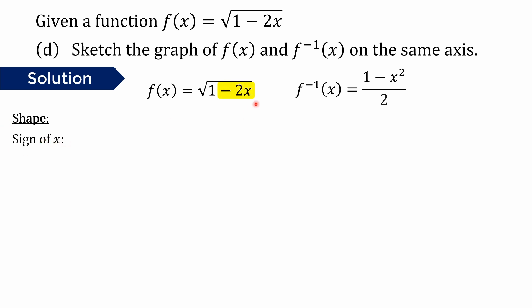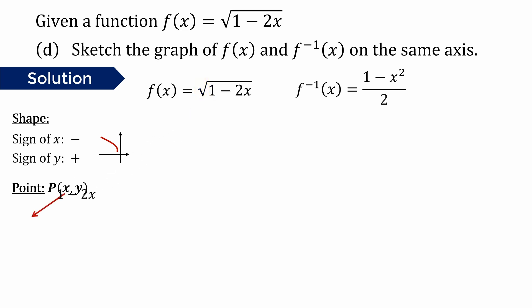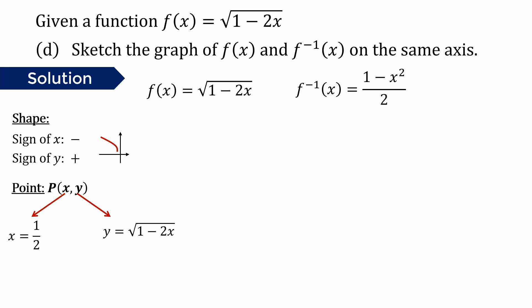The sign of x is the coefficient of x inside the square root, which is negative. The sign of y — the coefficient for the square root — is positive since there is no negative sign outside. So x is negative and y is positive, meaning the shape is in the second quadrant. To determine point P, we set the inside of the square root equal to 0 and solve, getting x equals 1/2. For the y-coordinate, we set the whole square root to 0, giving y equals 0. So point P is (1/2, 0).